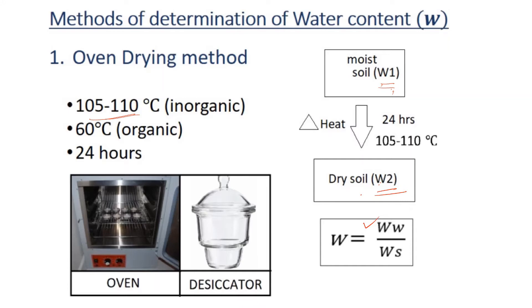We determine the water content using a glass container. This is an accurate experiment. We use the desiccator in the lab — this is how we handle the dry sample. When we use the dry sample and expose it to warm air, it will absorb moisture, so we must avoid that.